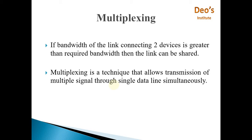Before going towards Frequency Division Multiplexing, first we will see what is multiplexing. If the bandwidth of a link connecting two devices is greater than the required bandwidth, then the link can be shared between different signals. Instead of wasting that extra bandwidth, we can combine different signals and pass them through the same line at a time. Multiplexing is a technique that allows transmission of multiple signals through a single data line simultaneously.